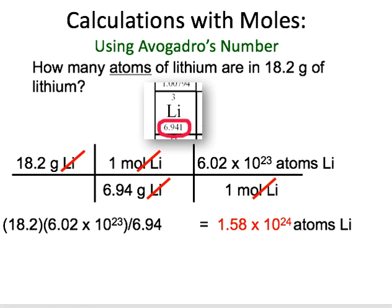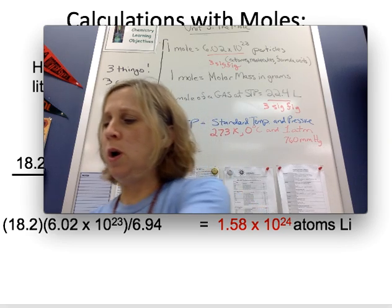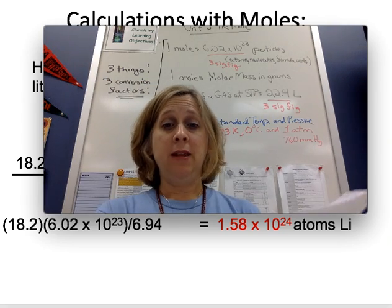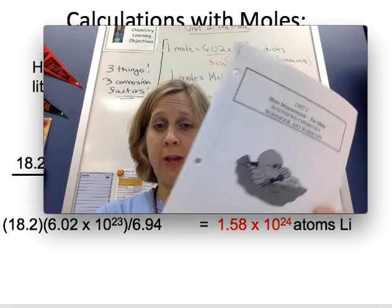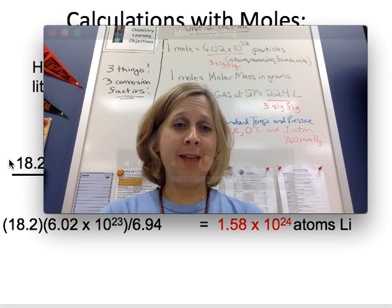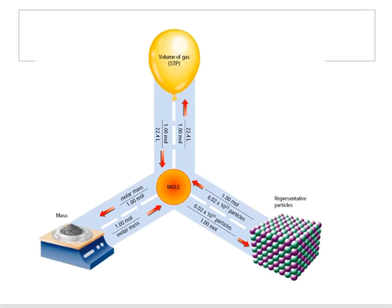That is really the whole unit — learning how to use these three conversion factors. Get your workbook out and start working on the homework problems. Think about the mole road: you have three choices of conversion factors, and you pick based on the units in the problem. If the problem involves two of the three units — grams, liters, or particles — you might need two steps, but you always have to travel through moles. Good luck, and that is your lecture.